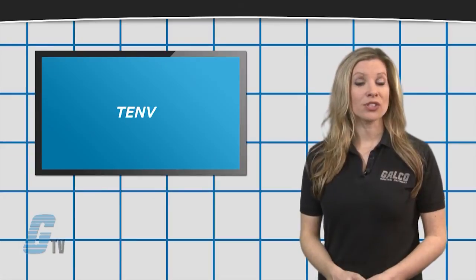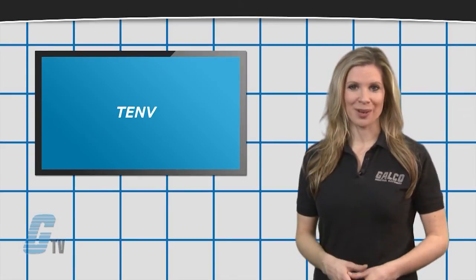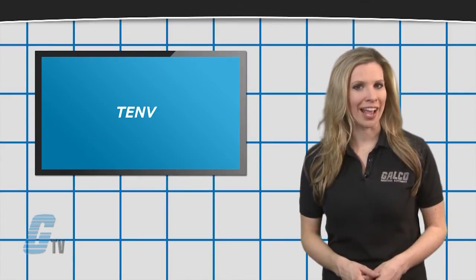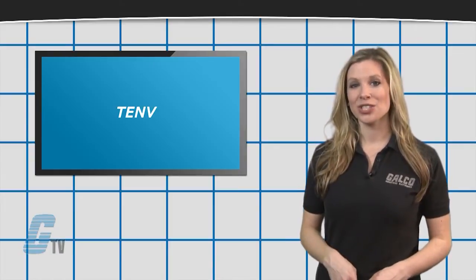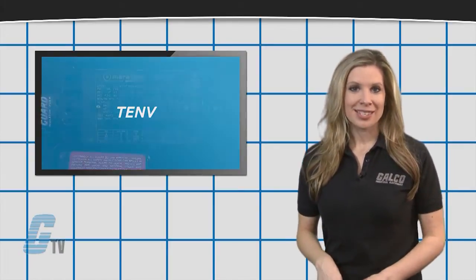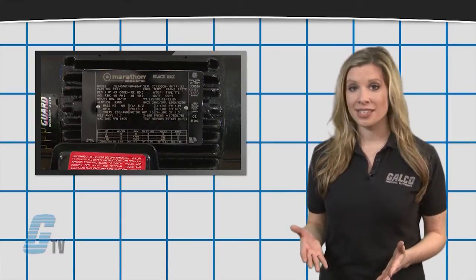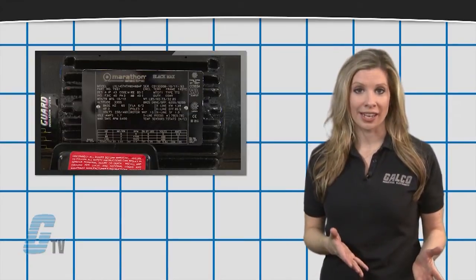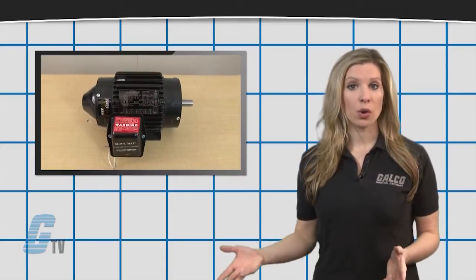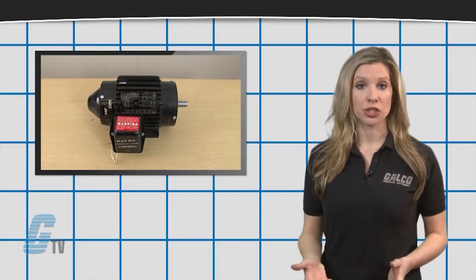The TENV motors offer greater protection from air contaminants and water spray and use thermal conduction to dissipate heat. Some TENV motors may use fins or higher heat resistant components to prevent overheating. These motors generally are lower in horsepower when compared to the other two.